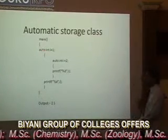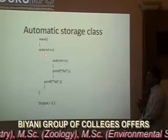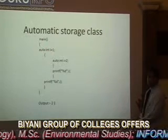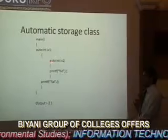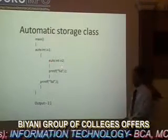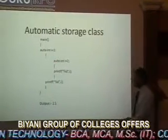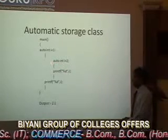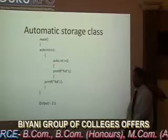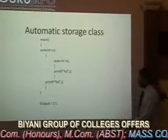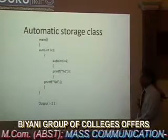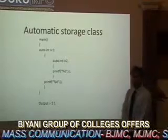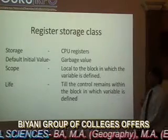For example, we declare 'auto int i = 1' in one block, and in another inner block we declare 'auto int i = 2'. When we print the value of i in the inner block, the value printed is 2. When we come back to the first block, the value of i is 1. This illustrates the auto storage class.